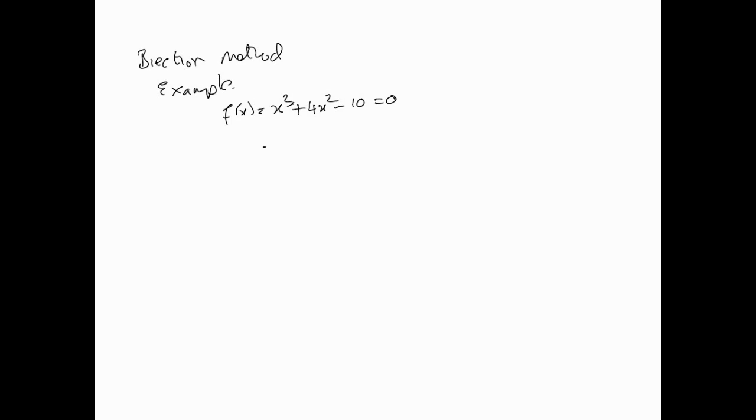This is the example we're going to be looking at: x³ + 4x² - 10 = 0. That's our function. And we are going to be looking for the particular root that's in the interval 1 to 2.